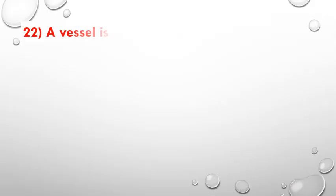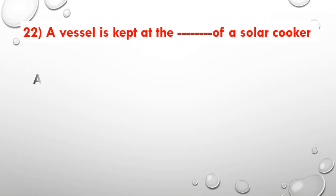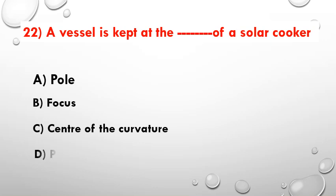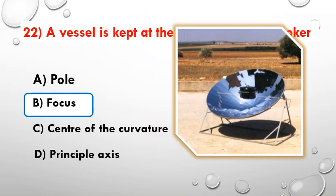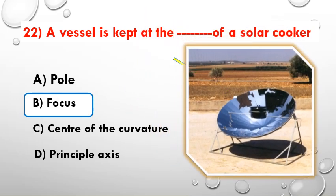A vessel is kept at the dash of the solar cooker. Options are: pole, focus, center of curvature, or principal axis. The answer is focus. Observe the picture — the vessel is placed at the focus point.